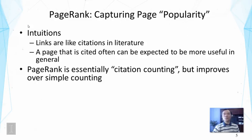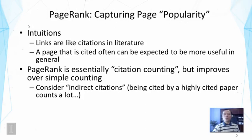Intuitively, PageRank does citation counting or in-link counting, but improves this simple idea in two ways. First, it considers indirect citations — you don't just look at how many in-links you have, but also at the quality of those pages pointing to you. If those pages themselves have many in-links, you get more credit. If the pages pointing to you have few in-links themselves, you get less credit. That is the idea of indirect citations.